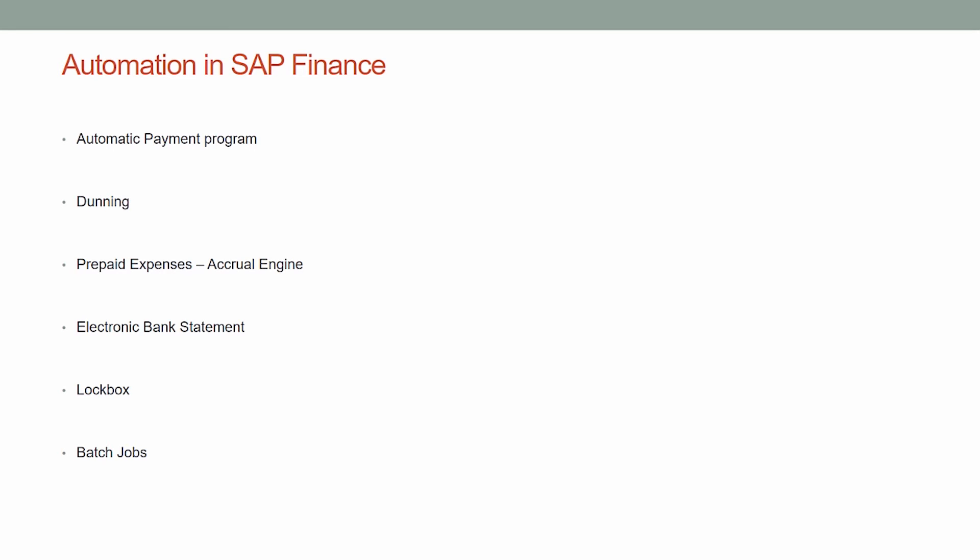Once the Electronic Bank Statement (EBS) is implemented, the bank statement comes from the bank and is automatically uploaded into SAP, updating the bank account. Many clearing accounts — such as check clearing, ACH clearing, and wire clearing — get automatically cleared. This removes a lot of manual work, gives real-time visibility into the bank balance, and makes the Bank Reconciliation Statement available in real time at any time.